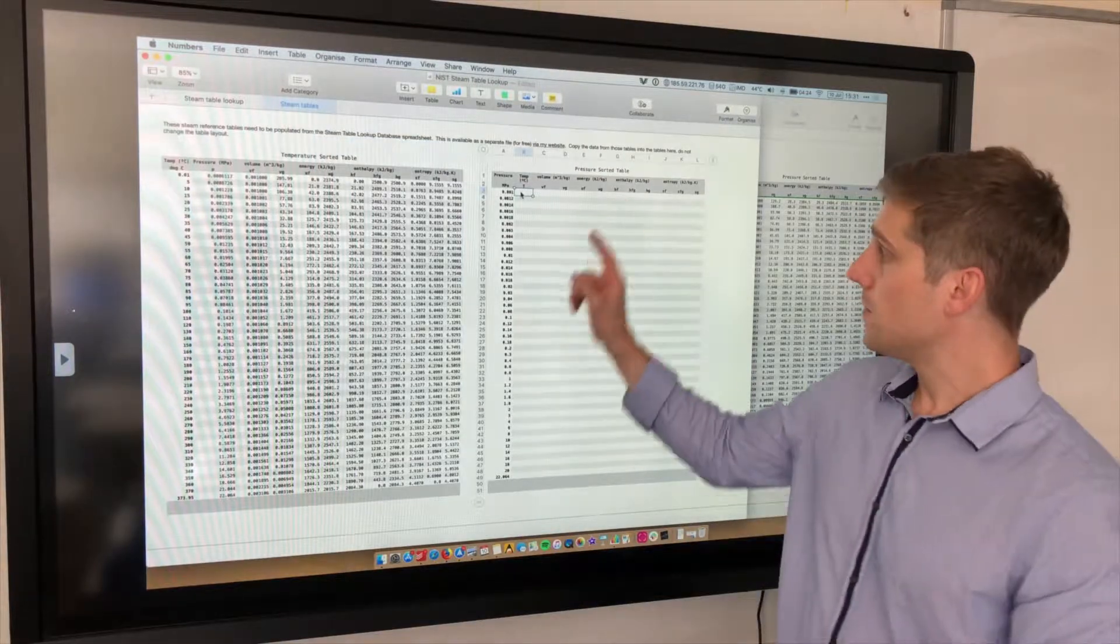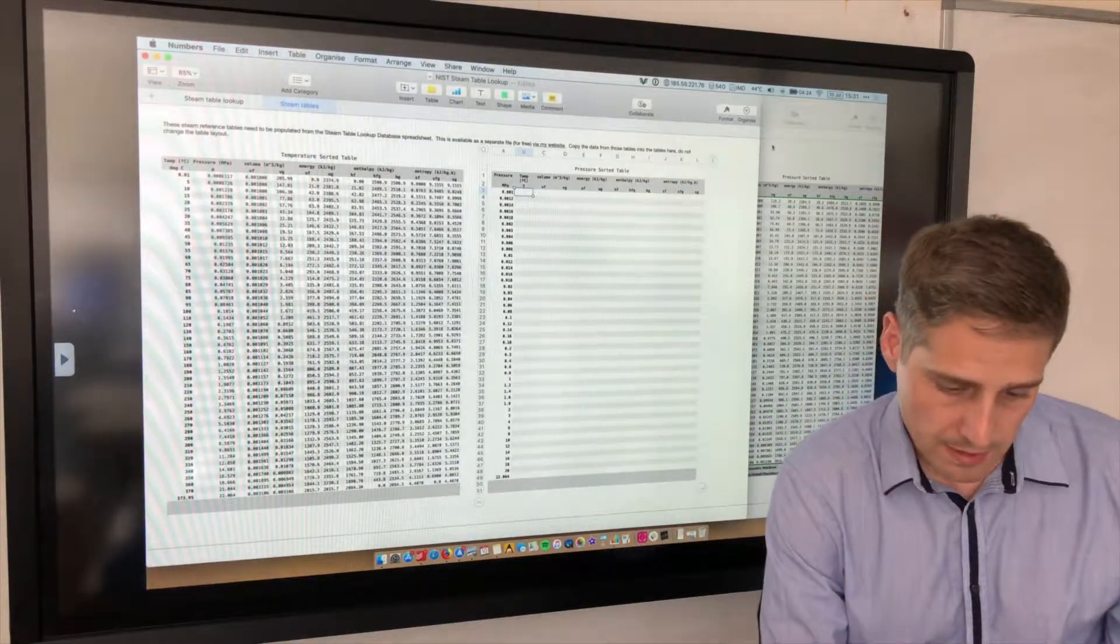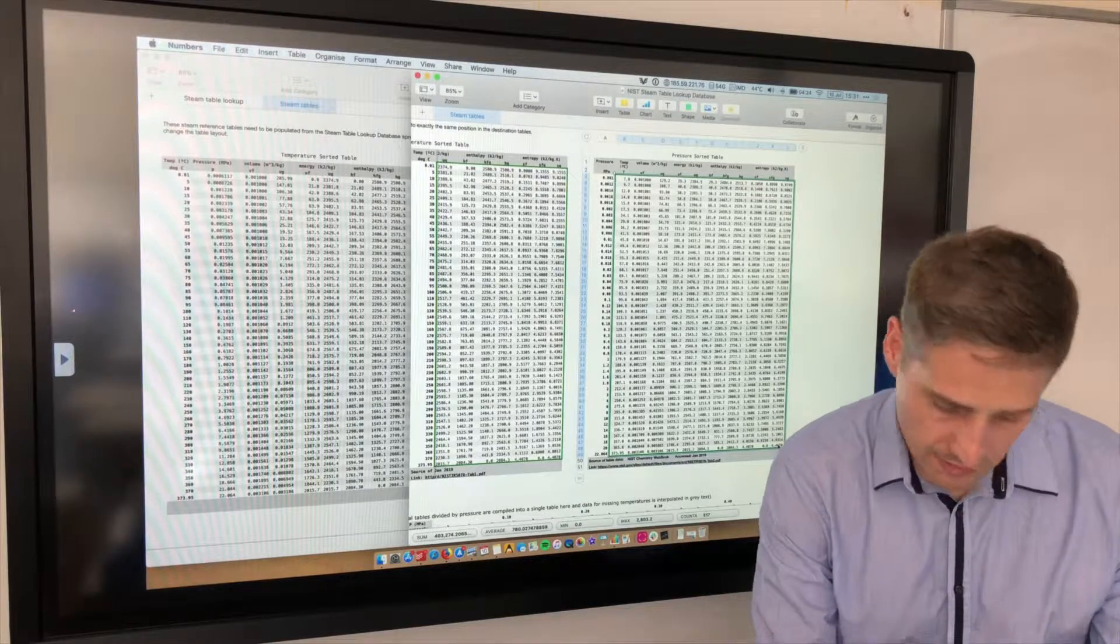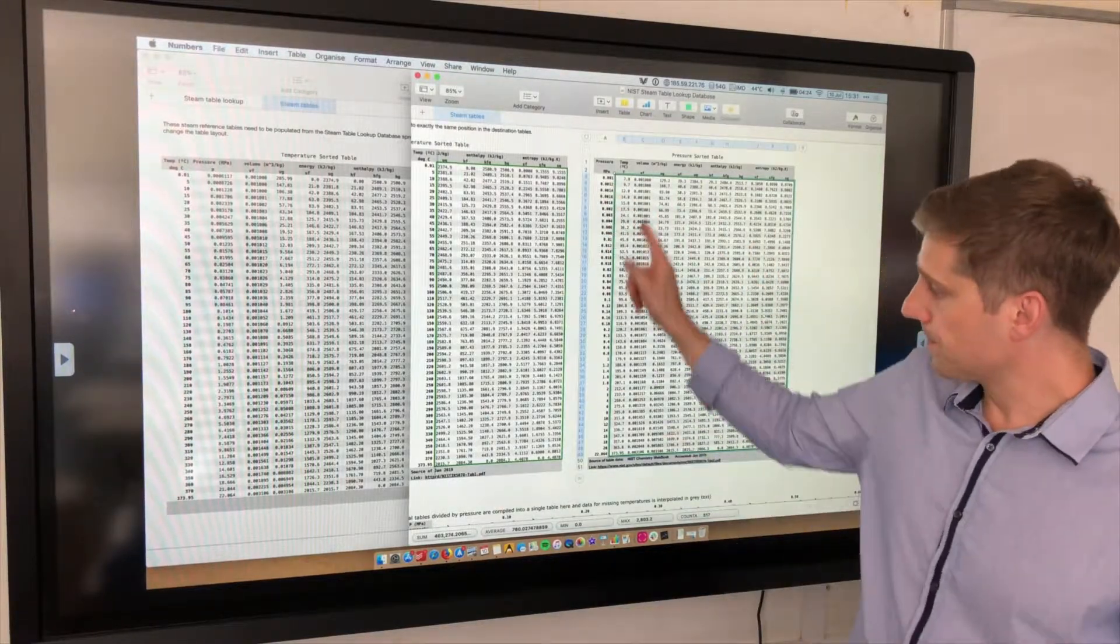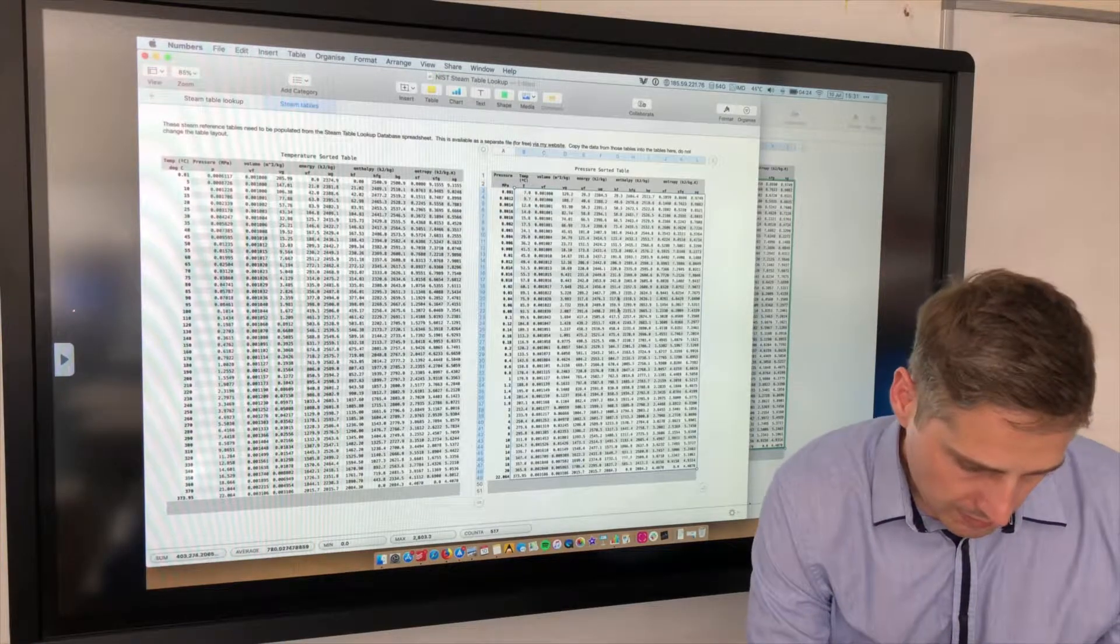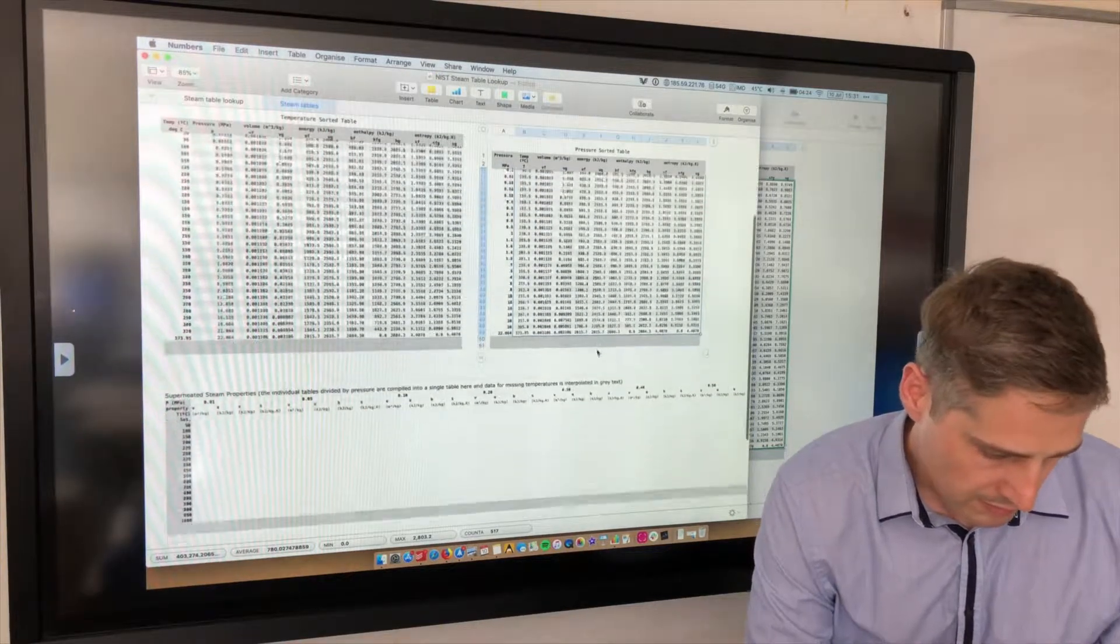Repeat the process for the pressure sorted table and the superheated steam. We're going to select everything in that green border there, copy that across and paste the match values. It's all looking good so far.